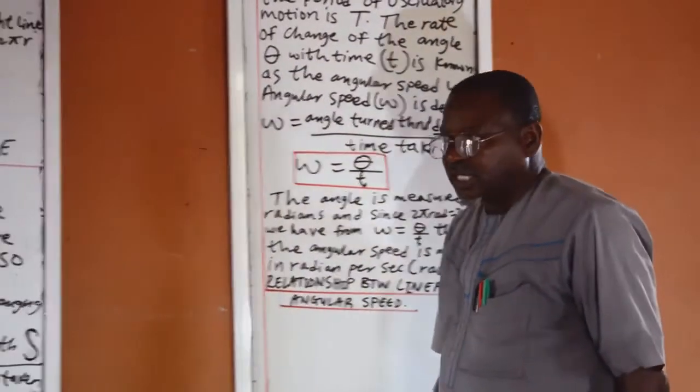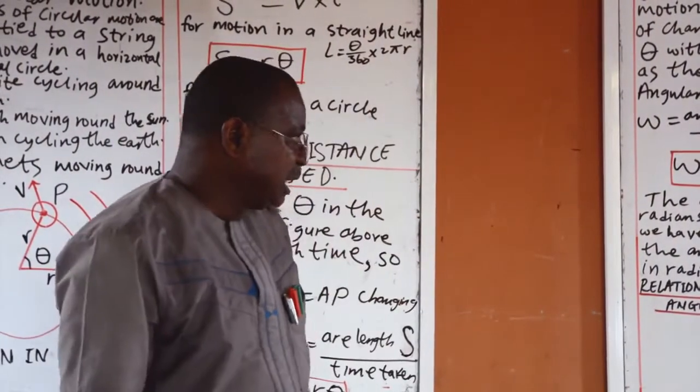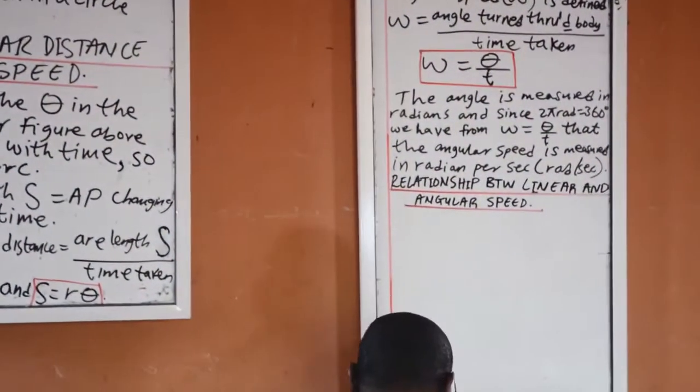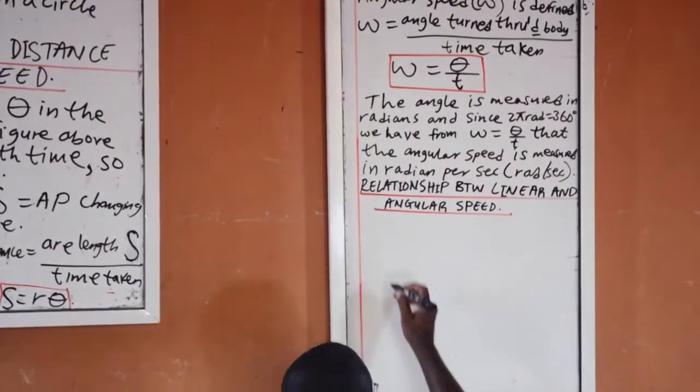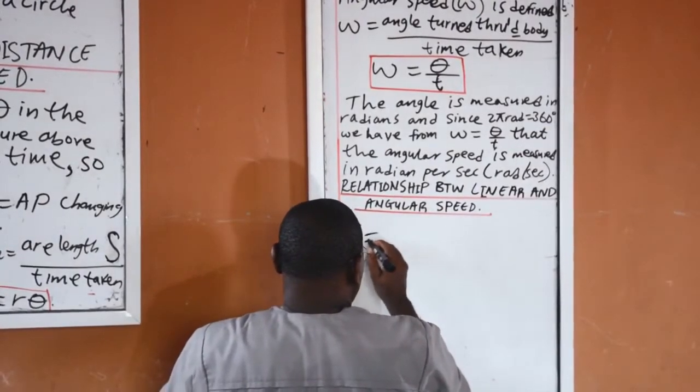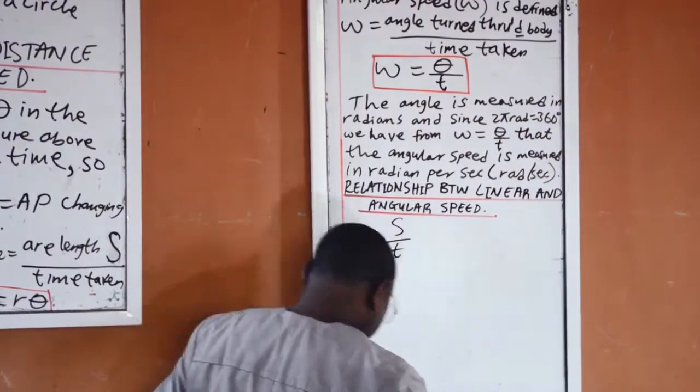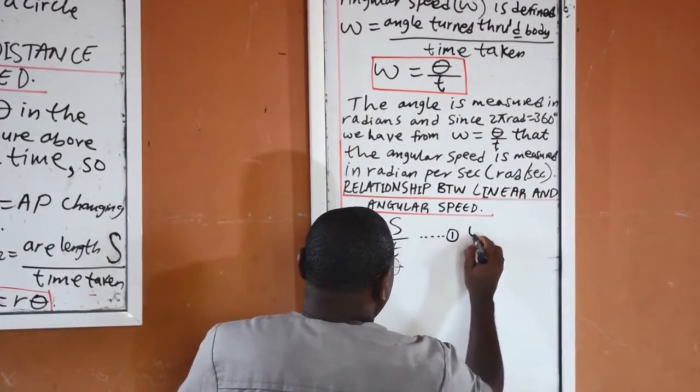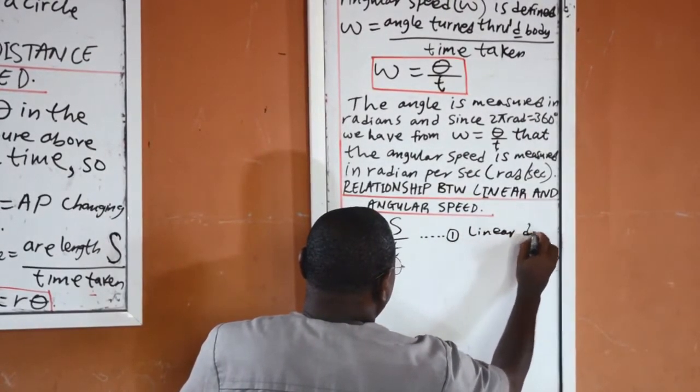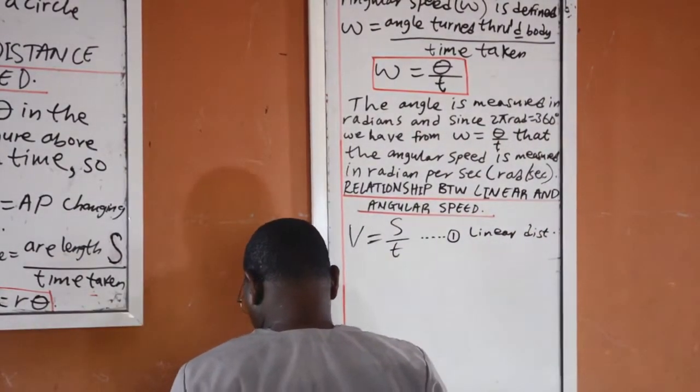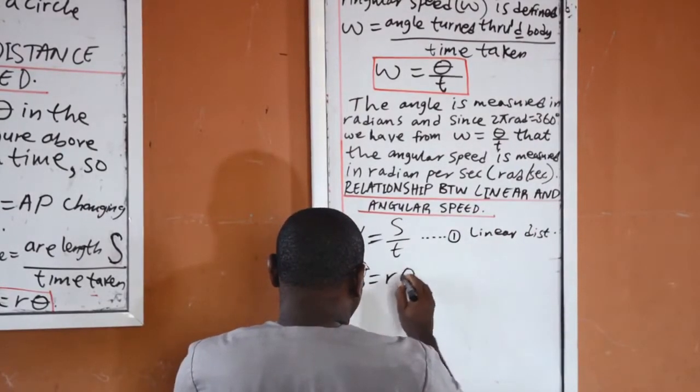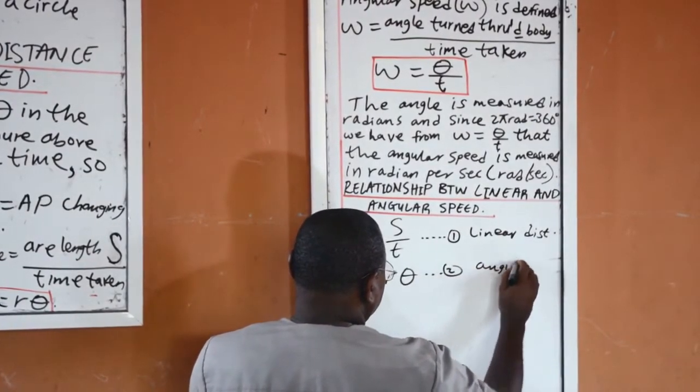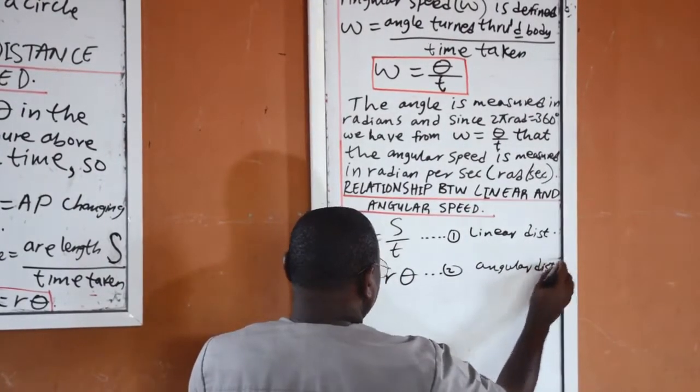Now, let us examine the relationship between linear and angular speed. Now, v is equal to s all over t from linear distance. And we also know that s is equal to r theta from angular distance.